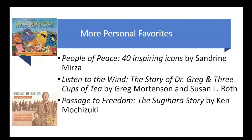People of Peace presents 40 inspiring icons of the 20th century — some well-known, others of lesser renown — who left a lasting mark on the movement towards peace in the world. Listen to the Wind, the story of Dr. Gregg and Three Cups of Tea, is the story of a male United States nurse who helped build over 50 schools in Pakistan and Afghanistan and changed the lives of many people. Passage to Freedom, the Sugihara story, is based on the true story of the author's father, a Japanese diplomat in Lithuania in 1940 who helped thousands of Jews escape the country in direct defiance of the Japanese government's orders.